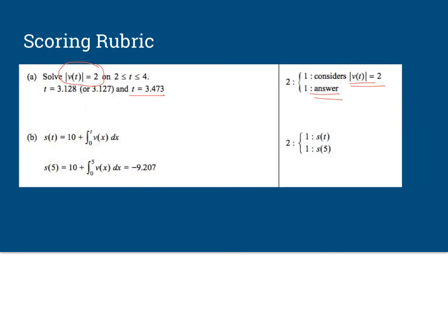For B we have to consider the initial position and then the integral of velocity. Make sure that your limit is a different variable than the variables used in the integrand. So you get one point for that setup and then you get one point for the actual value at 5, which is negative 9.207.